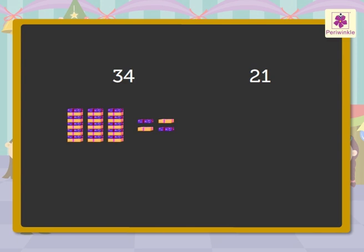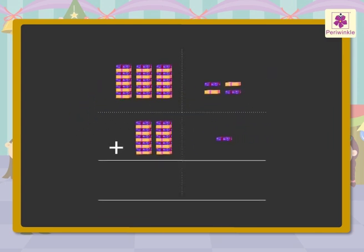We can divide the 34 gifts into 3 tens and 4 ones and the 21 gifts into 2 tens and 1 one. Place the 1 one below the 4 ones and the 2 tens below the 3 tens. Now, let's add the ones first and then the tens. Thus, 4 ones plus 1 one is equal to 5 ones.